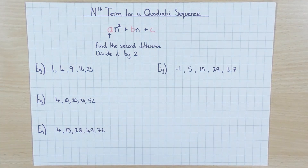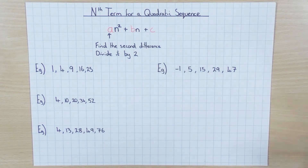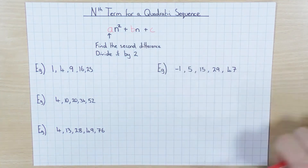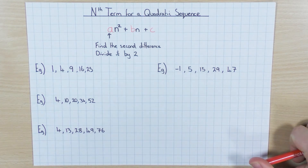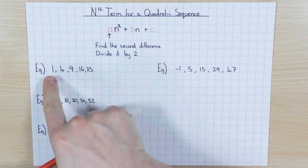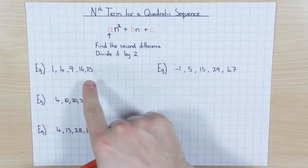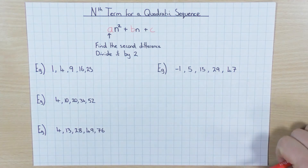Hi guys, in this video we're going to have a look at how we work out the nth term for a quadratic sequence. A quadratic sequence is a little bit different to a linear sequence, which is what the other video is based on. In a linear sequence it goes up by the same amount each time, however for a quadratic sequence that's not the case.